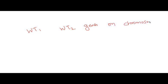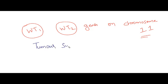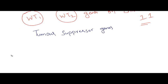There are two genes: WT1 and WT2 genes on chromosome number 11. These are tumor suppressor genes. Any deletions or mutations in these genes will result in the formation of Wilms Tumor.